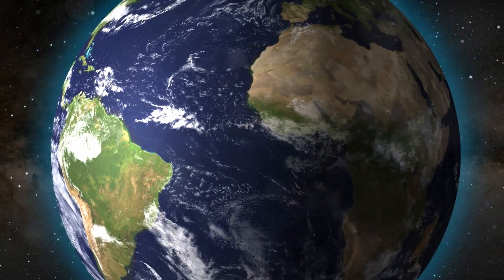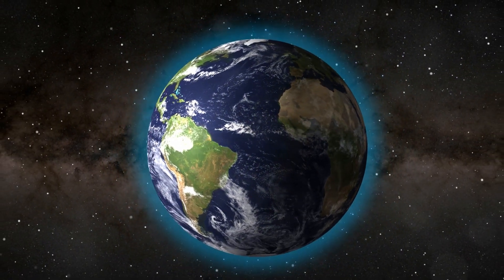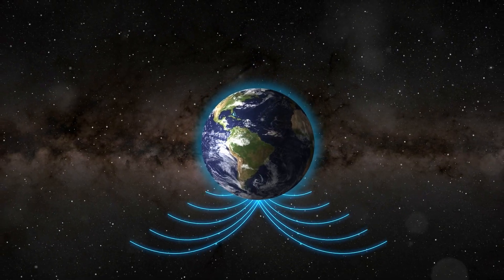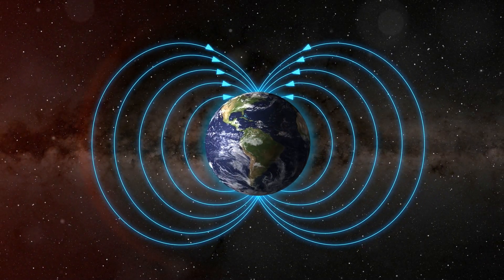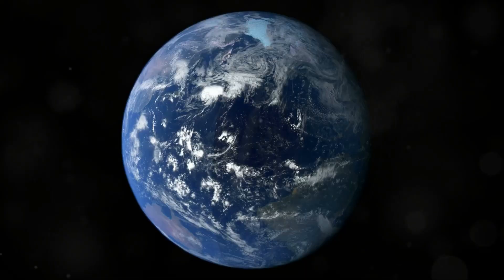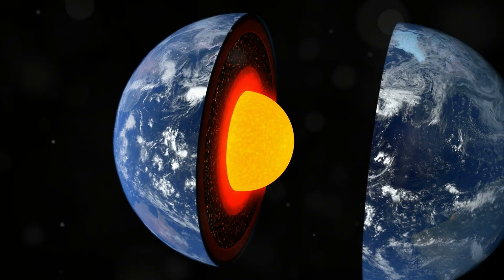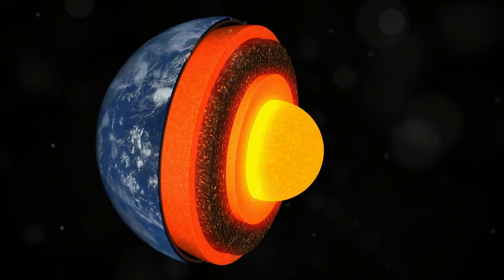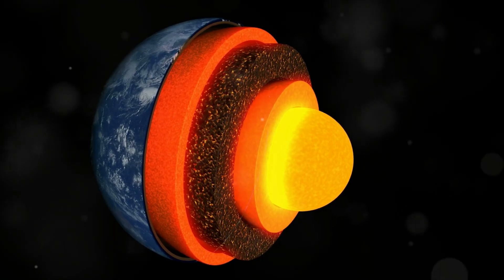To understand the significance of the South Atlantic Anomaly, we first need to appreciate Earth's magnetic field. Earth's magnetic field is an invisible shield that surrounds our planet, generated by the movement of molten iron within the outer core. This churning motion creates electric currents, which produce the magnetic field.